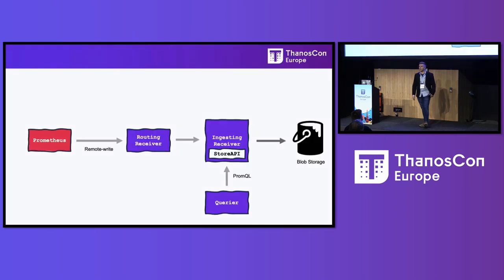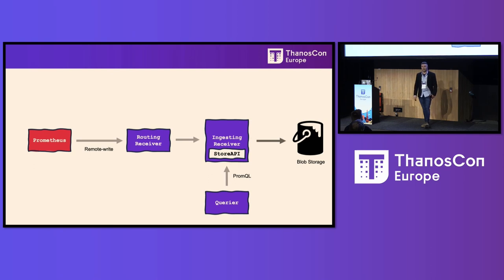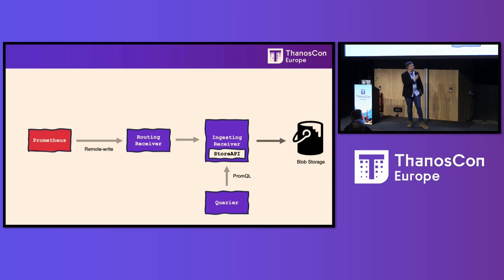The Thanos Receive component was basically a POC in prod, as Sasuata said. It allows us to remote write metrics to Thanos — this was not the original vision for Thanos; the sidecar was. But we wouldn't be able to work with Thanos without this component. We literally remote write 10,000 batches of metrics every 30 seconds from 10,000 hosts around the world.